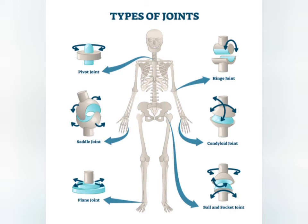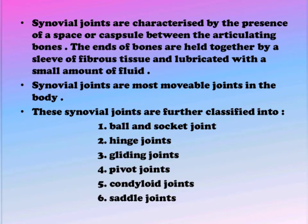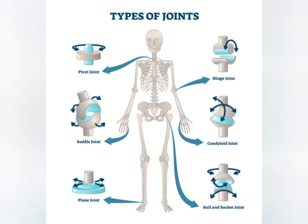In the gliding joint, the articular surfaces are flat and very slightly curved and glide over one another. However, the amount of movement possible is very restricted. This group of joints is the least movable of all the synovial joints.